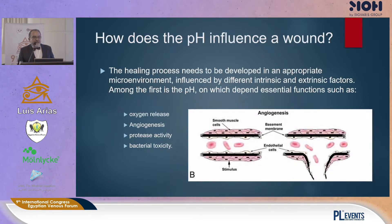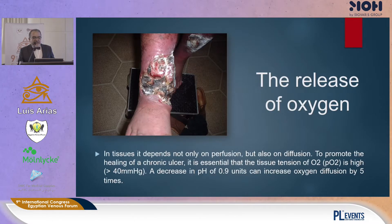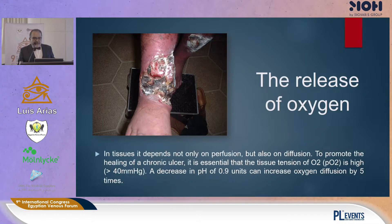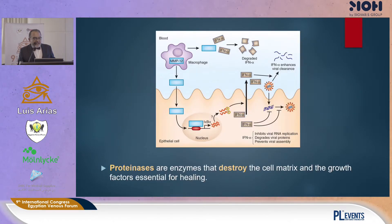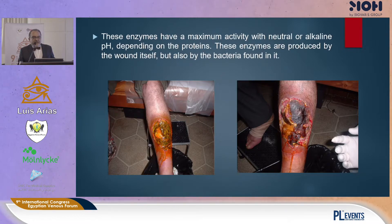I want to talk about how pH influences the healing process. Healing needs to develop in an appropriate microenvironment influenced by different intrinsic and extrinsic factors. Among these, pH affects essential functions such as oxygen release, angiogenesis, protease activity, and bacterial toxicity. The release of oxygen depends not only on perfusion but also on diffusion. To promote healing of a chronic ulcer, it is essential that the tissue tension of O2 (PO2) is above 40 mmHg. Decreasing pH by 0.9 units increases oxygen diffusion by 5 times. Proteases are enzymes that destroy the cell matrix and growth factors essential for healing. These enzymes have maximum activity at neutral or alkaline pH.